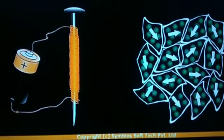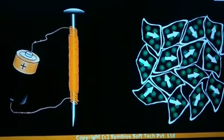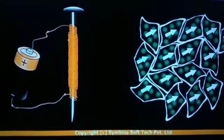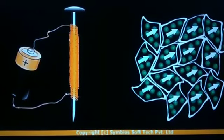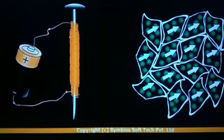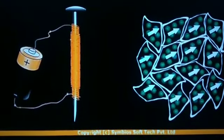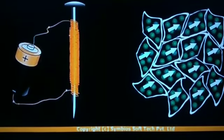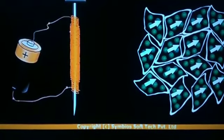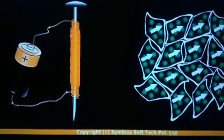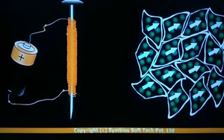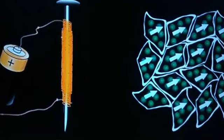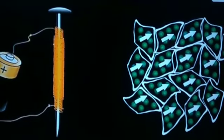Whenever the current flows through the needle from positive to negative, all the magnetic directions become the same inside the material. Before electric current, the directions of the magnetic field are in certain different directions; but when the current is going on through the needle, the magnetic directions all become the same inside the iron material of the needle. So this is called the magnetic effect of electric current, and we can call it electromagnetism.